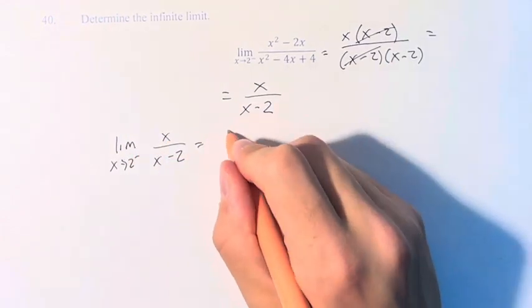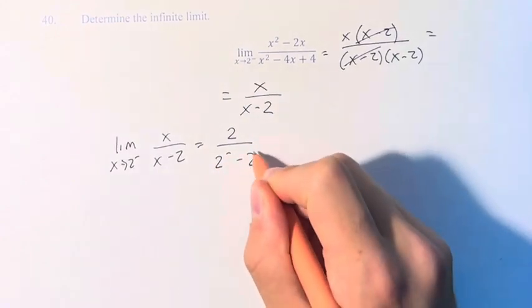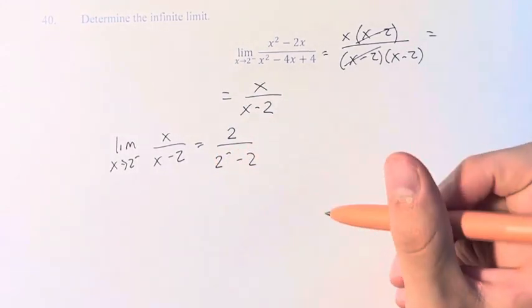Now plugging in 2 up top doesn't do anything, but on the bottom, if we're approaching 2 from the left minus 2, we could have issues because if we just plug in 2, then we're dividing by 0.